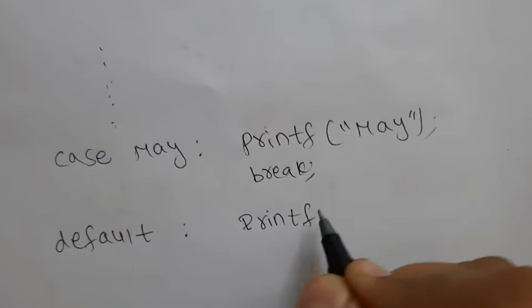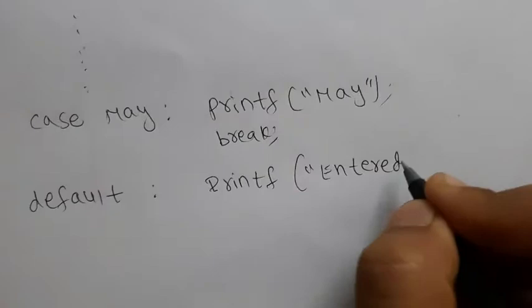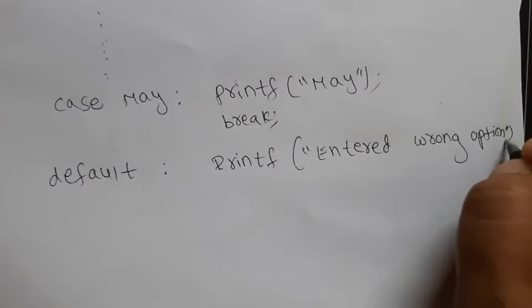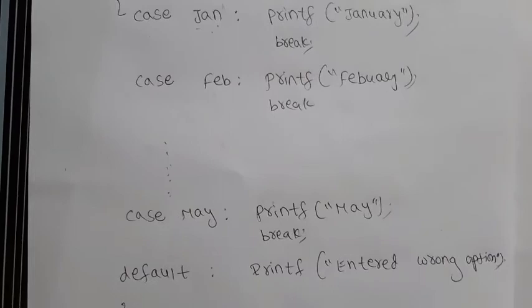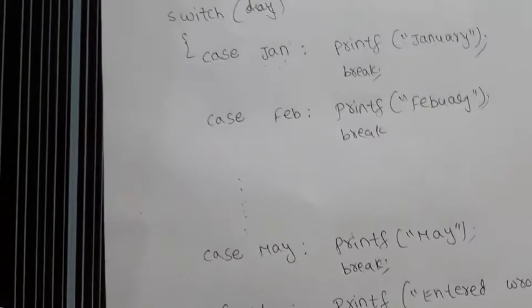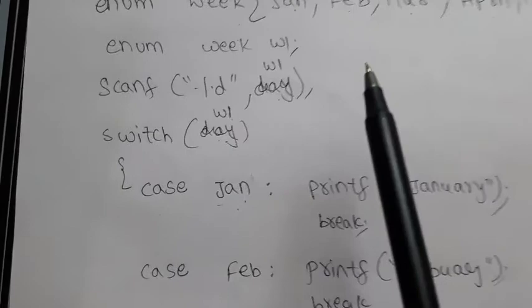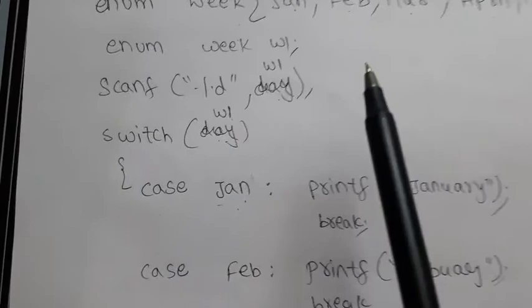The advantage of this program is: if you enter 1, January will be printed; 2 prints February; 3 prints March; up to 12 for December. That is the main advantage of enumerated data types. What you must remember is it is stored as an integer internally, but when you write the code you use the enumeration constants like jan, feb, march. I hope you are clear with this presentation about arrays, structures, functions, unions, and enumerated data types.